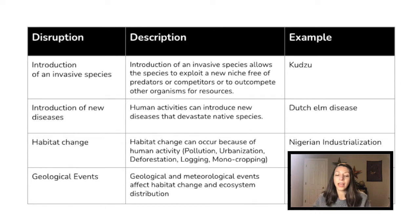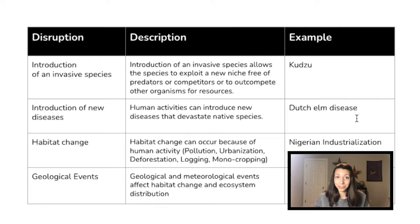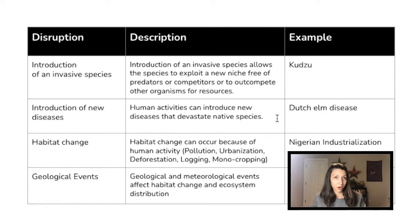Human activities can also introduce diseases that devastate native species. Dutch elm disease, for example, can kill trees really rapidly if it's not managed properly. For habitat change, there's a lot of things humans can do that change the habitat — such as pollution, urbanization, deforestation, logging, and monocropping. The list goes on.